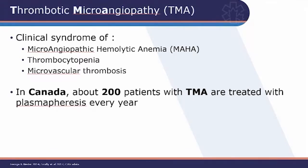Thrombotic microangiopathy is a clinical syndrome that can be caused by a variety of conditions. It presents with microangiopathic hemolytic anemia — hemolytic anemia associated with fragments or schistocytes on the blood film — as well as thrombocytopenia and evidence of microvascular thrombosis. TMA is very rare; in Canada, about 200 patients are treated with plasmapheresis every year, so some physicians may go their entire career without encountering a patient with this condition.